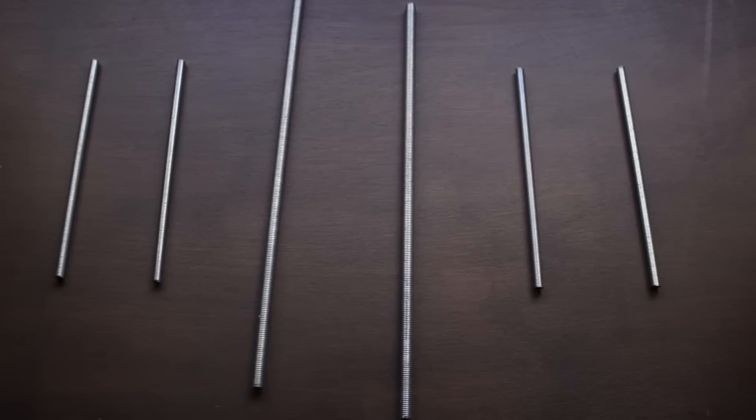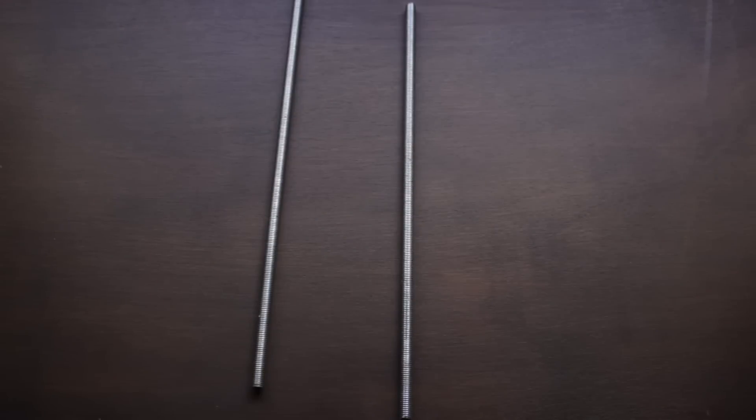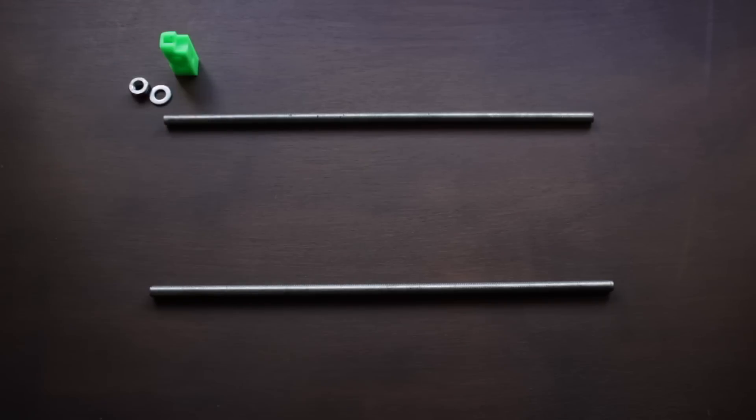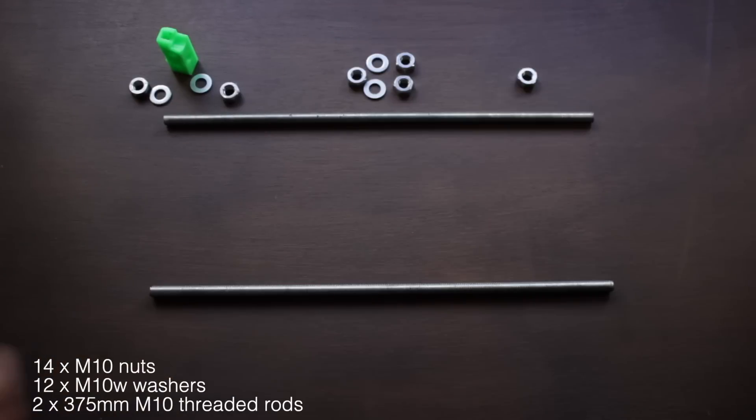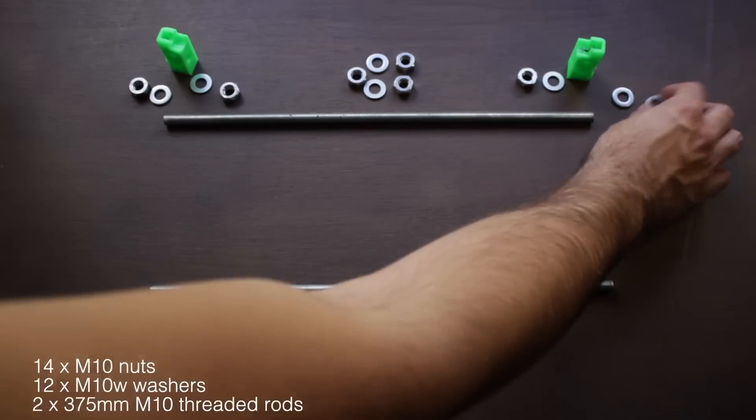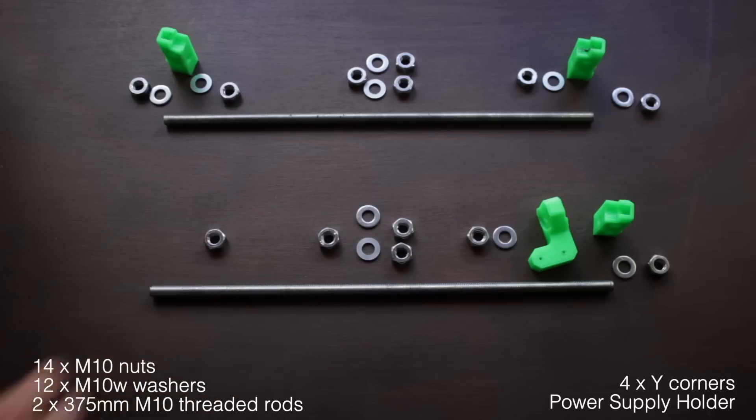Anyways, all the hardware components will be linked down in the description as well. So after the intense cutting, here we have all the 6 segments. We are going to start with the 2 M10 threaded rods and for that we will need to introduce some more components to each of them. We will place them in the exact same order that you can see on screen and they will make a total of 14 M10 nuts, 12 M10 washers and the 2 M10 threaded rods. To this hardware we have to add the 4 Y corners we printed and the power supply holder. Once we have all of them in place, we are going to screw them to the threaded rod.